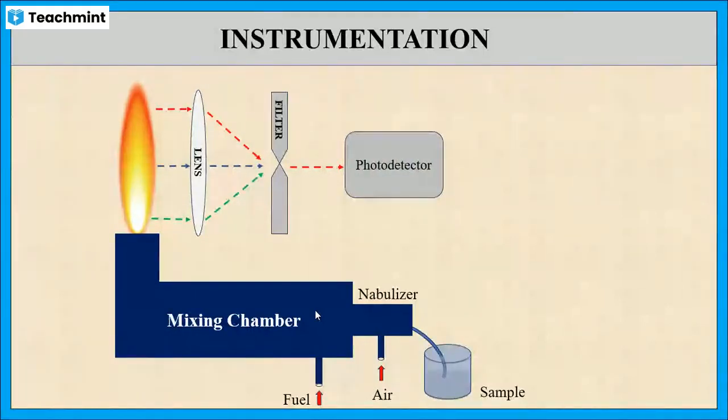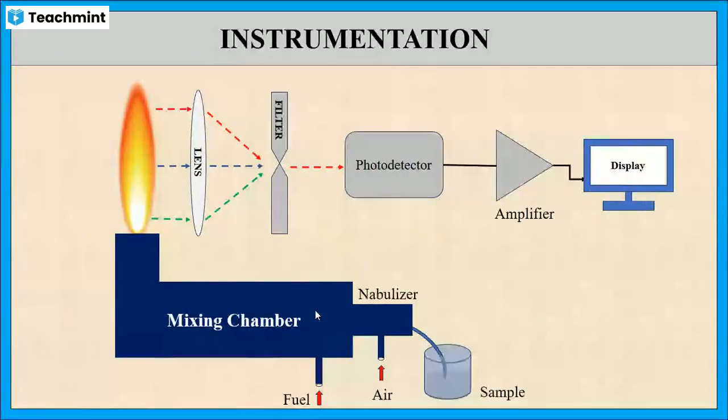This electrical signal is amplified at amplifier and displayed in the display. This is the instrumentation and the working of flame photometry.